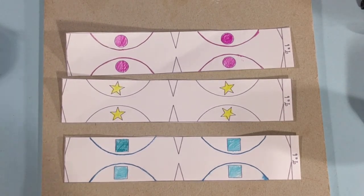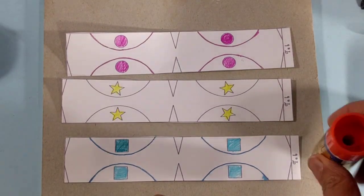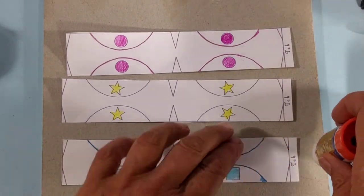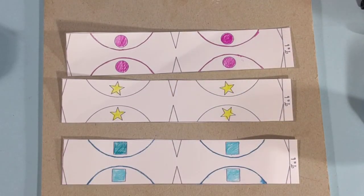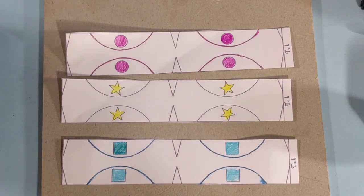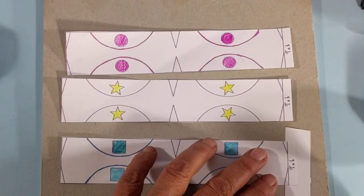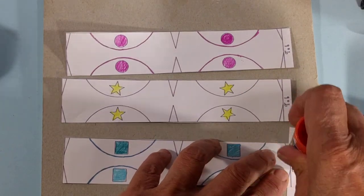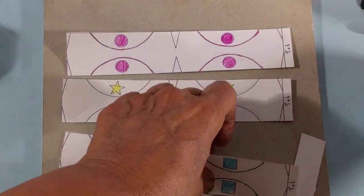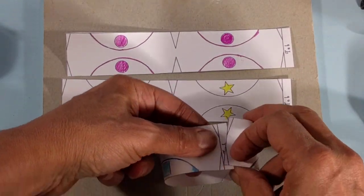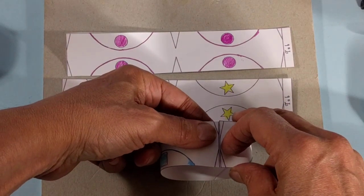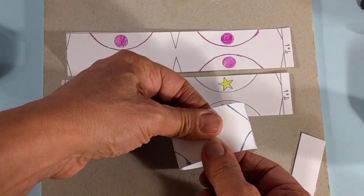We're going to make loops out of two of these. There's a little word that says tab here and I'm going to put a little glue on that. Make it into a ring.